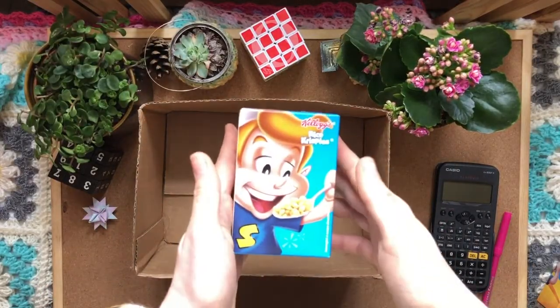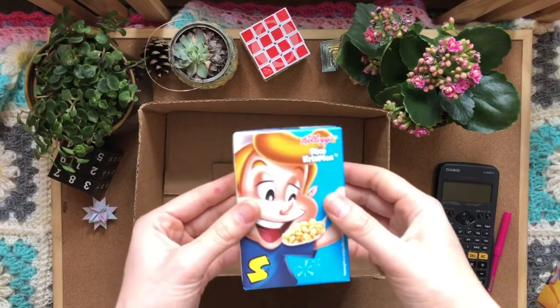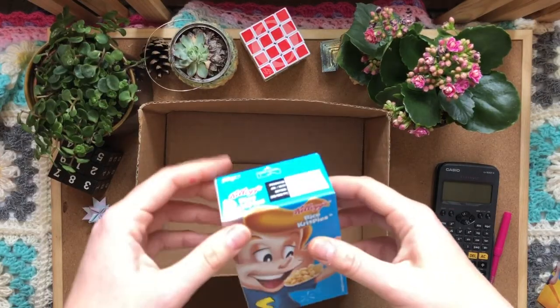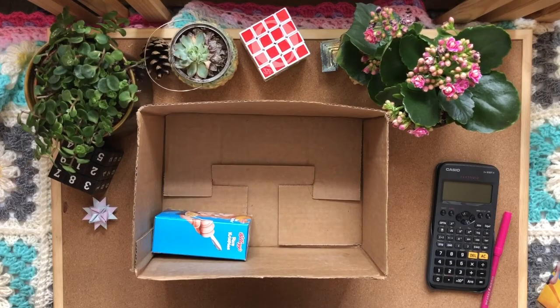Now, any time you're packing a cuboid into a box, there's actually six different orientations that you can take. One, two, three, four, five, and six.